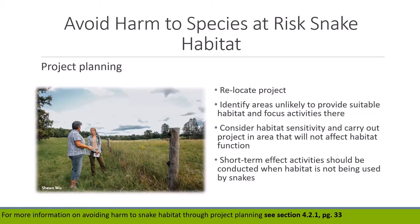It is important to consider indirect effects as well. For example, building a structure next to snake thermoregulation sites would impede the functionality of the habitat by shading it, even if the footprint is not located in the habitat. Consider the sensitivity of the habitat — remember the three categories — and carry out projects in areas least sensitive to alteration. If a project only has short-term effects, conduct it during the time of year when the habitat is not being used, such as carrying out activities affecting a hibernaculum's water table during summer when snakes aren't hibernating.